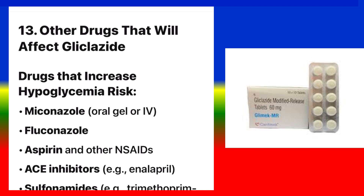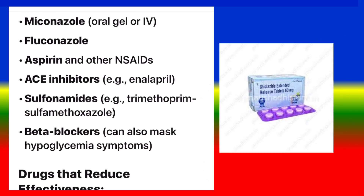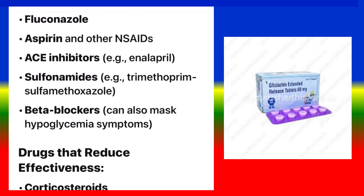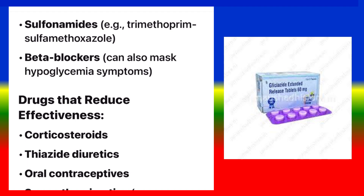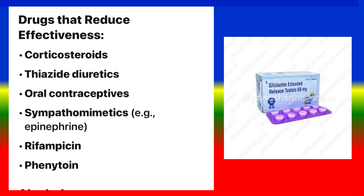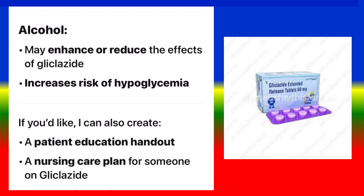Drug interactions — Drugs that increase hypoglycemia risk: miconazole (oral gel or IV), fluconazole, aspirin and other NSAIDs, ACE inhibitors (e.g. enalapril), sulfonamides (e.g. trimethoprim-sulfamethoxazole). Beta blockers can also mask hypoglycemia symptoms. Drugs that reduce effectiveness: corticosteroids, thiazide diuretics, oral contraceptives, sympathomimetics (e.g. epinephrine), rifampicin, phenytoin. Alcohol may enhance or reduce the effects of gliclazide and increases risk of hypoglycemia.